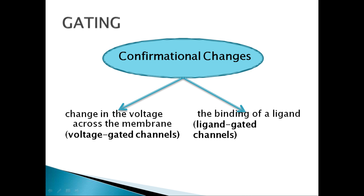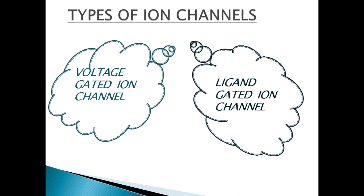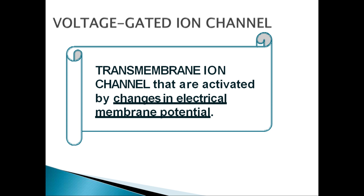On the basis of these two main conformational changes, we can divide ion channels into two main groups. Number one is voltage-gated ion channels, and number two is ligand-gated ion channels. Voltage-gated ion channels are the transmembrane ion channels that are activated by the change in the electric membrane potential.